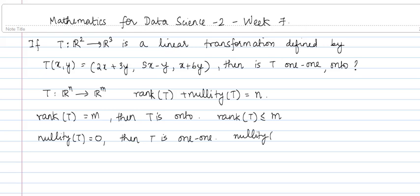The null space of T is a subspace of the domain which is Rn, so nullity of T can be at most n. Now since we have two numbers n and m, let us consider the three possible cases: n greater than m, m greater than n, and n equal to m.